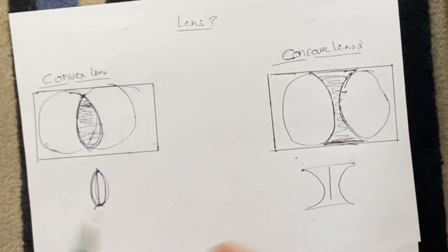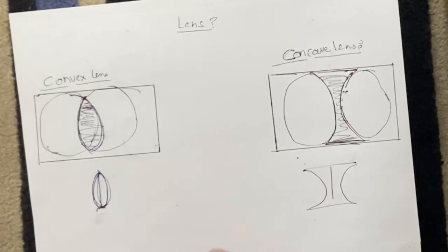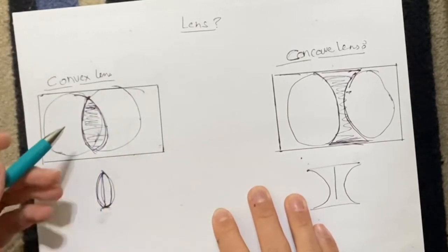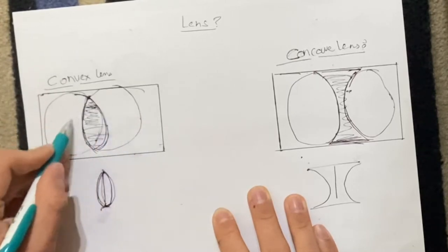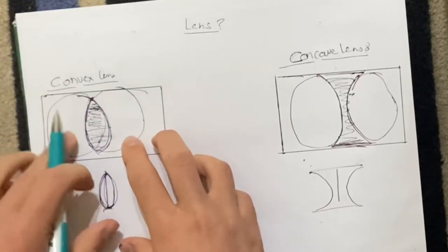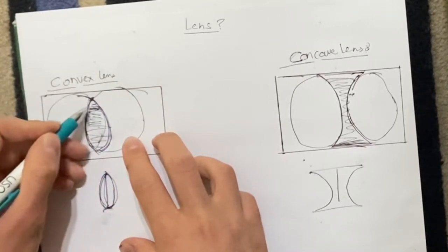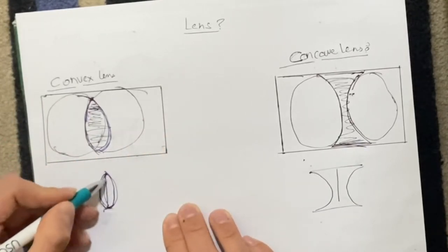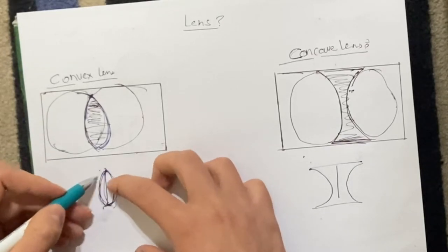So let's take a look at this. First of all, what is a lens? I've taken two examples. I drew a glass slab and then I cut out something like this, and also I cut out something like this. So between these two spheres, there is something left over — and that is called a convex lens. With a convex lens, it is bulging outside.